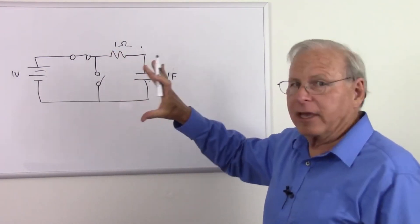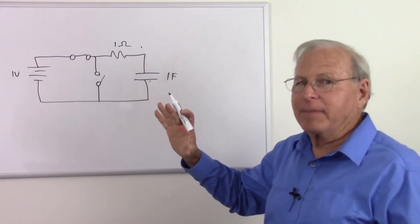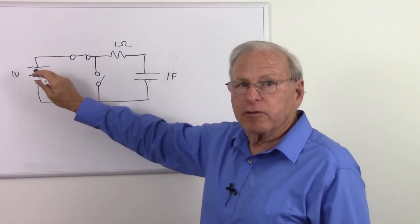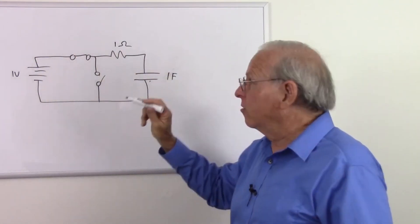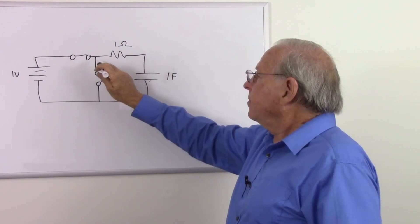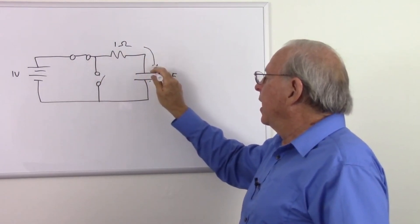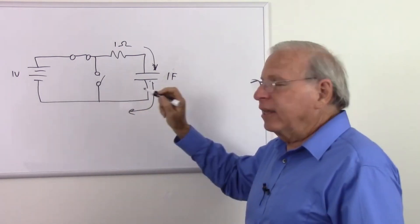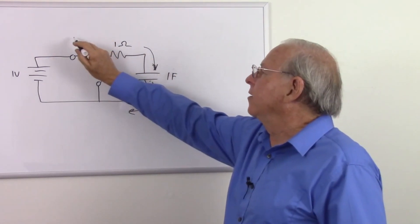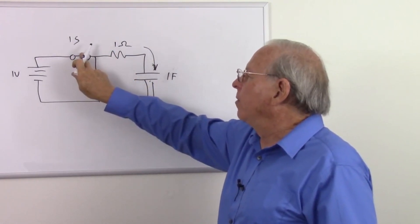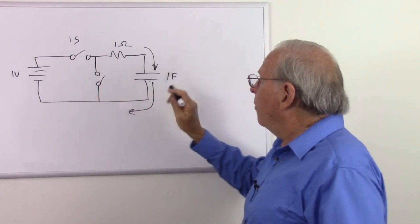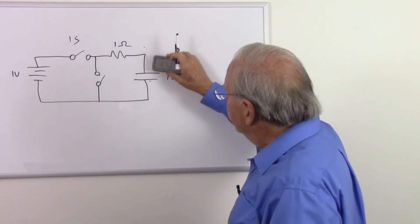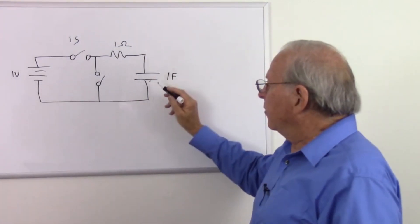Switching to conventional current now, since most of industry and academia prefer it — conventional current means current flows from positive to negative. Current flows into the capacitor and piles up on one plate, shoving current off the other side. It looks like a short circuit. Let's let that continue for one second, then open the switch. At this point, we see that the capacitor has built up some energy.